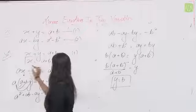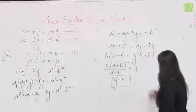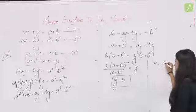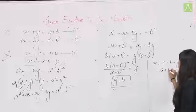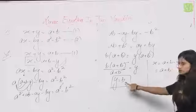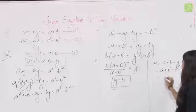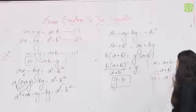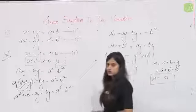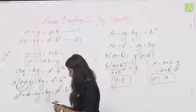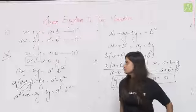अब x की value निकालते हैं: x = a + b − y = a + b − b = a। तो x = a और y = b।